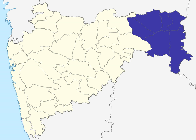The British Nagpur Division included the current districts as well as Balaghat District, currently part of Madhya Pradesh. After Indian independence, the Central Provinces and Berar became the new state of Madhya Pradesh. The Indian states were reorganized along linguistic lines in 1956, and on 1 November, Nagpur and Amravati Divisions were transferred to Bombay State, while Balaghat District remained in Madhya Pradesh. The Marathi-speaking portion of Bombay State became Maharashtra State in 1960.